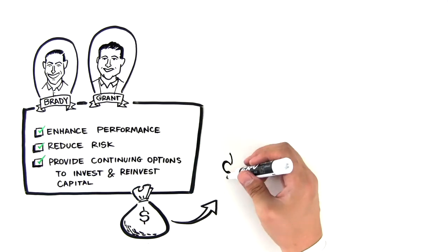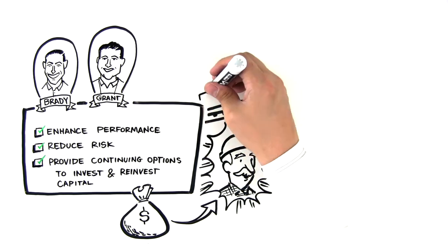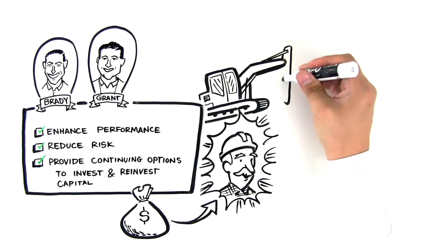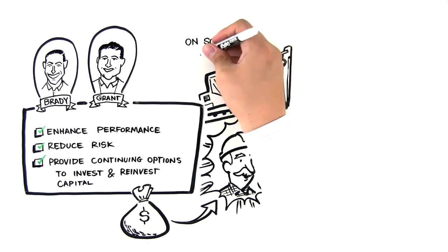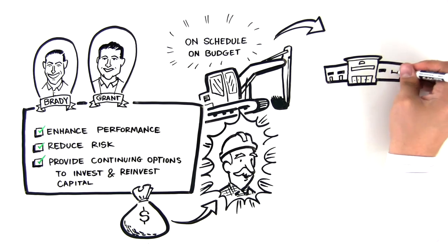After securing the financing to develop the new property, Wheelhouse hires trusted general contractors who construct the building and associated improvements on schedule and on budget. Once Wheelhouse completes the development, the company follows one of two models.